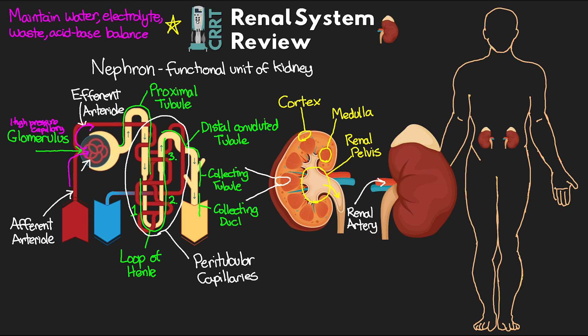This hydrostatic pressure forces water to be filtered across the basement membrane. The basement membrane of the glomerulus is a semi-permeable membrane that allows all but the larger molecules to pass through — excluding things like protein, albumin, and red blood cells. Particles small enough to pass move from areas of higher to lower concentration via diffusion. Additionally, when enough water is forced across via hydrostatic pressure, additional solutes are dragged along — a process called convection.